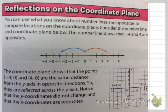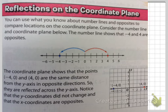Reflections on the Coordinate Plane. It says that you can use what you know about number lines and opposites to compare locations on the coordinate plane. Consider the number line and coordinate plane below. The number line shows that negative 4 and 4 are opposites — when a number is an equal number of spaces from 0, it is the opposite of that number.